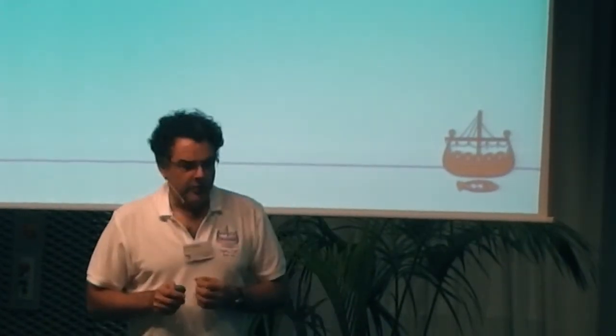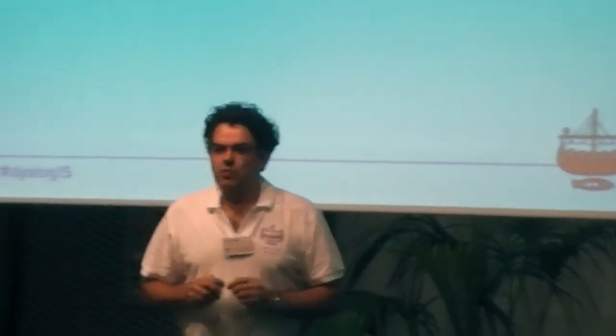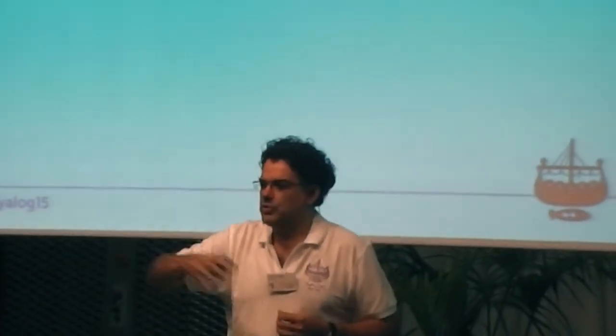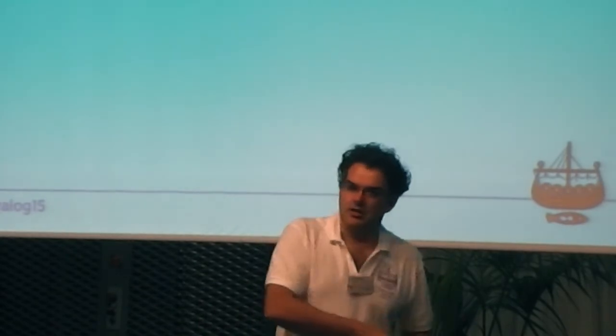Currently in version 14.0 — and in 14.1 as well — in the interpreter using the I-beam that we have, we can create data binding sources for scalar values: a number, an integer, a double, a boolean. We also consider a character vector as a scalar entity in the data binding mechanism, since it goes out as a .NET string. For a scalar, all we need to implement is the INotifyPropertyChanged interface, which contains the functionality that allows the data side to let the UI side know that data has changed so it can update itself. The reverse can also happen, where when the UI element detects the user has changed the data, that information is passed back to the data side.